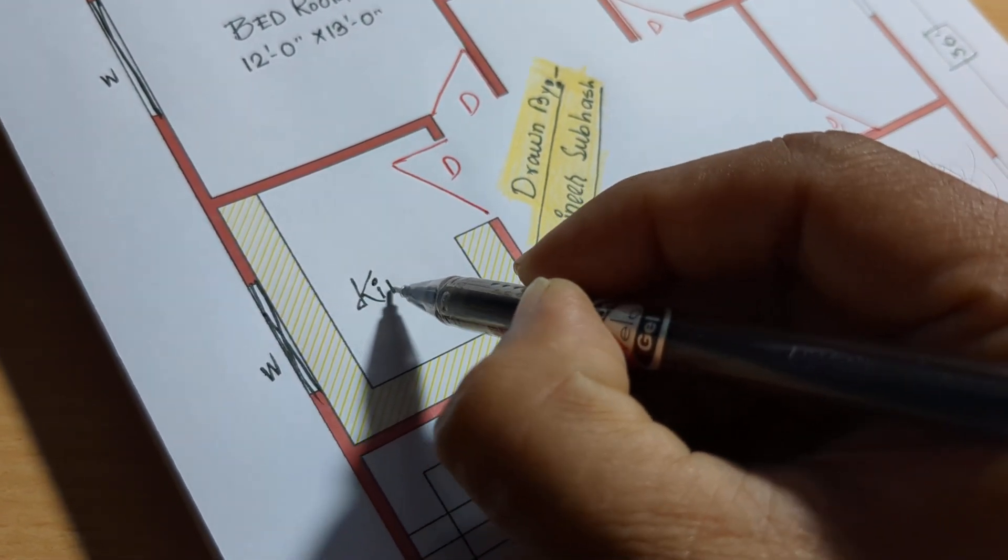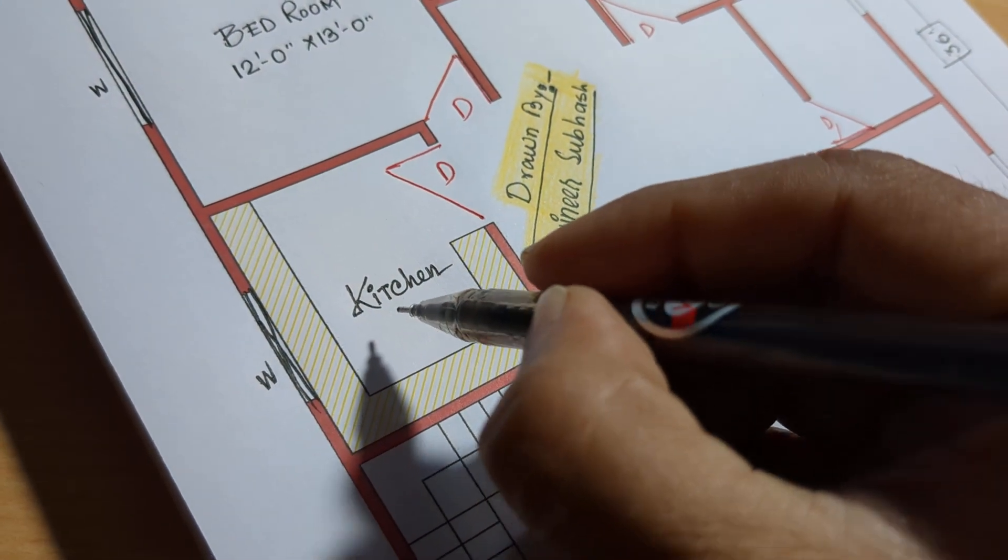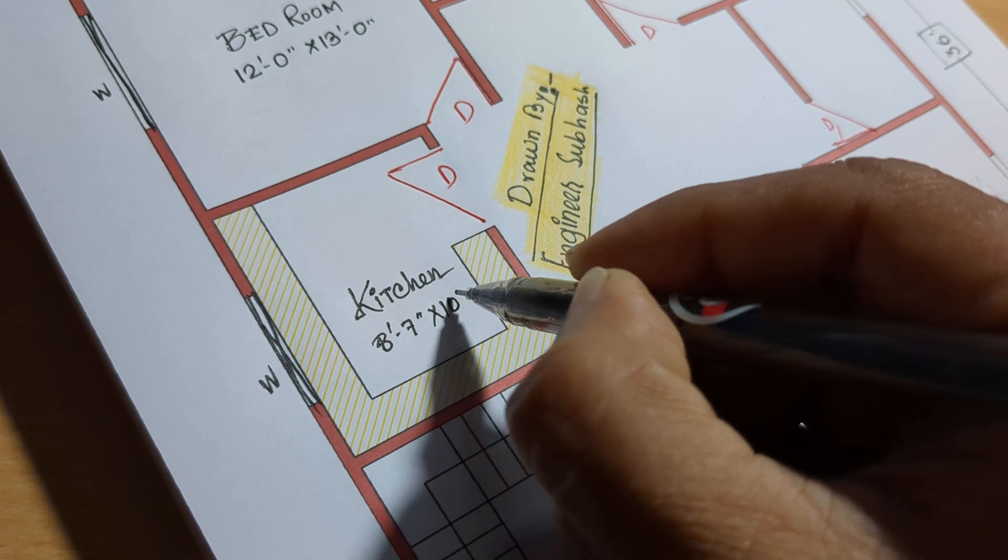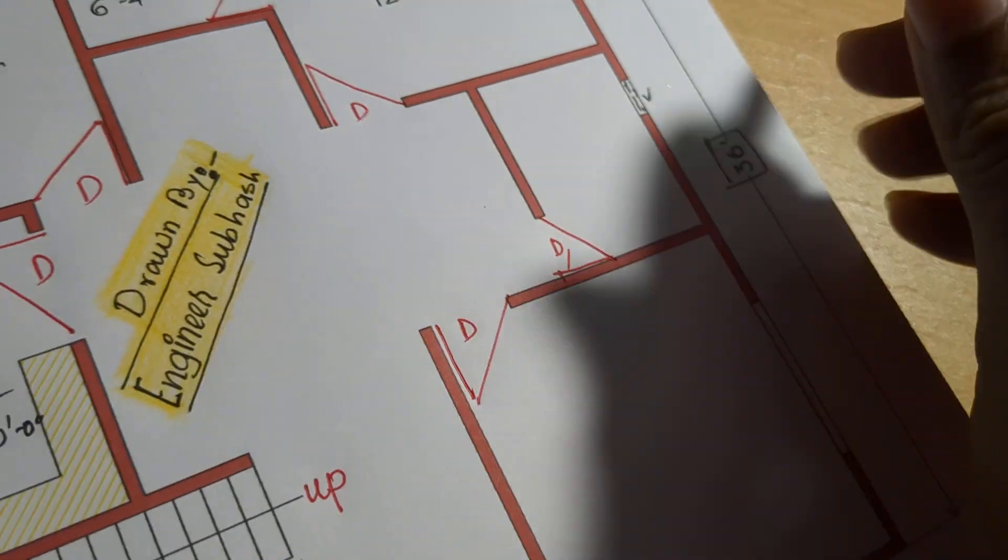Kitchen: 8 feet 7 inch by 10 feet 0 inch. Ventilator.